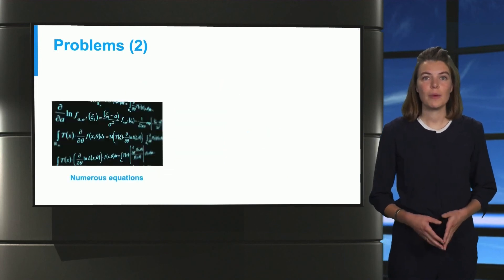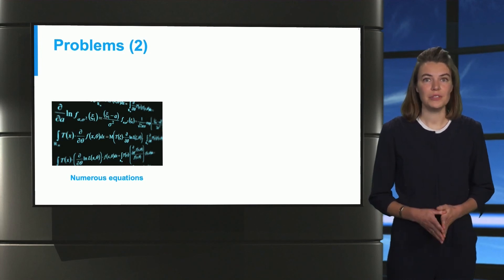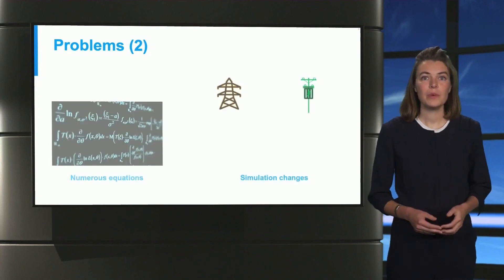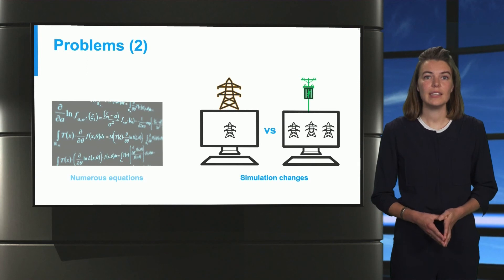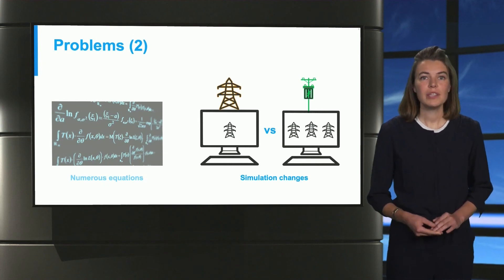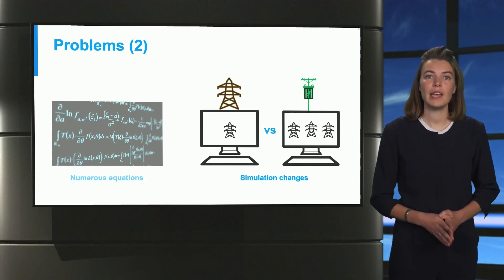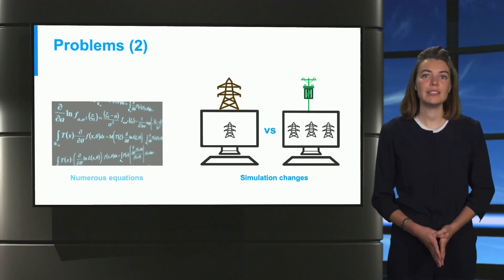Another problem encountered is that there are many equations. Questions such as can we use them all, or can we only partly use these equations, arise. When we discussed the difference between the two networks, we mentioned the differences in the balancing of the networks, and the need to simulate only one or all three phases. This leads to having two different simulation techniques. We must determine if it's best to do decoupled or coupled simulation, both for the transmission and the distribution grid, and also how can we combine them accurately and efficiently.